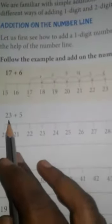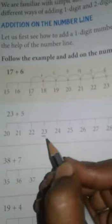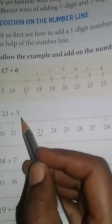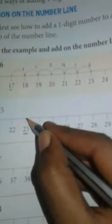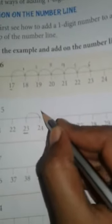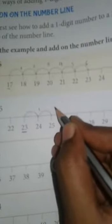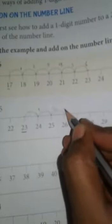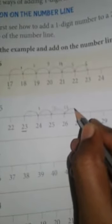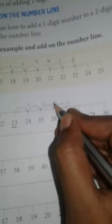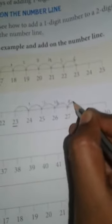Next number line is, numbers start from 20 to 30. Here, they are given, add 23 plus 5. Where is 23? 23 is here. Mark this number. Plus 5. So student, we have to add 5 more numbers in 23. From 23 to 24 is 1, 24 to 25 is 2, 25 to 26 is 3, 26 to 27 is 4.